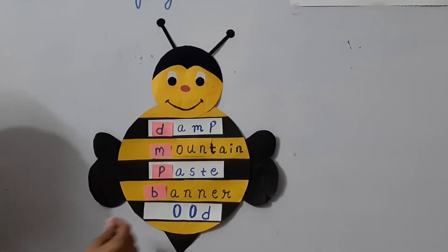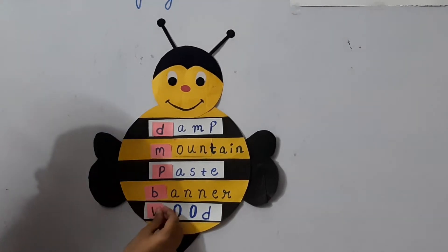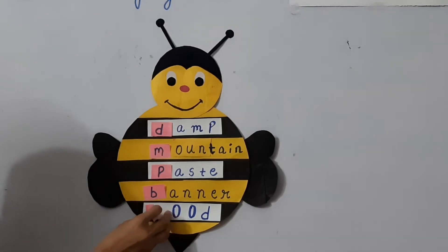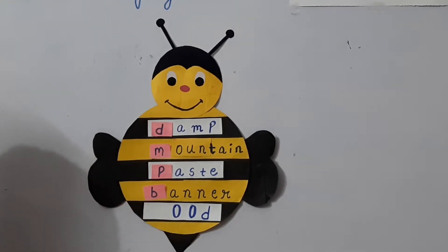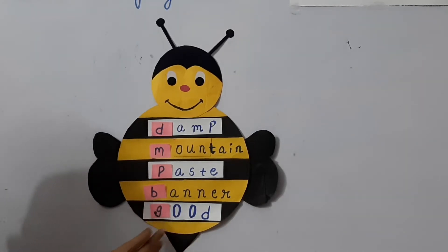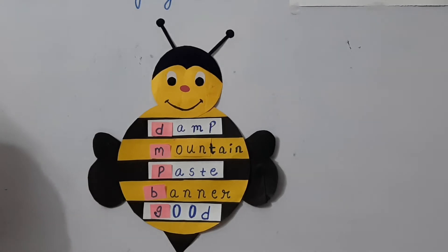The next one — if I add W, what will it become? W-O-O-D, wood. And the rhyming word for wood will be good. G-O-O-D, good. Wood and good.